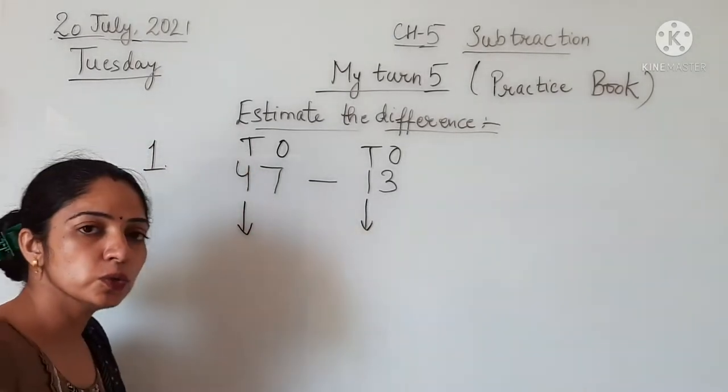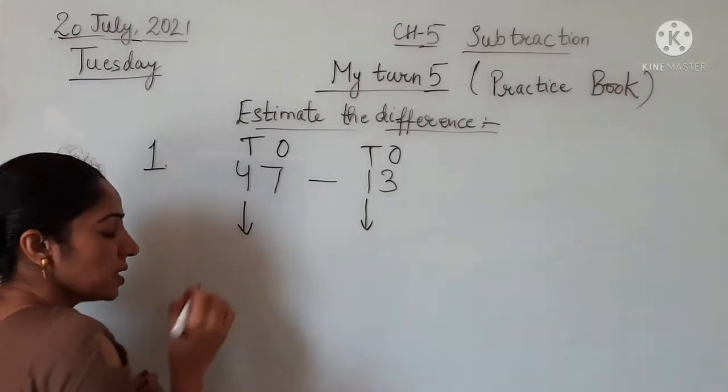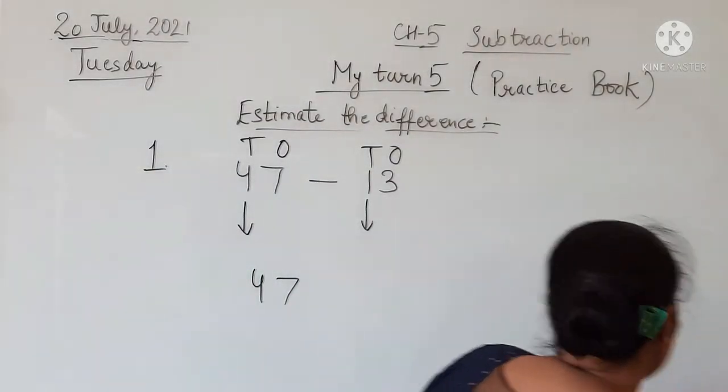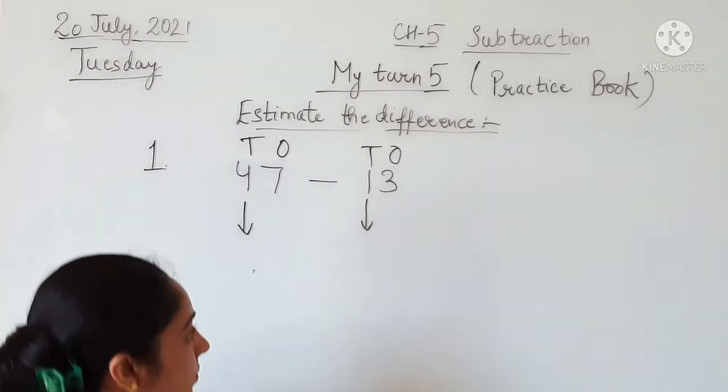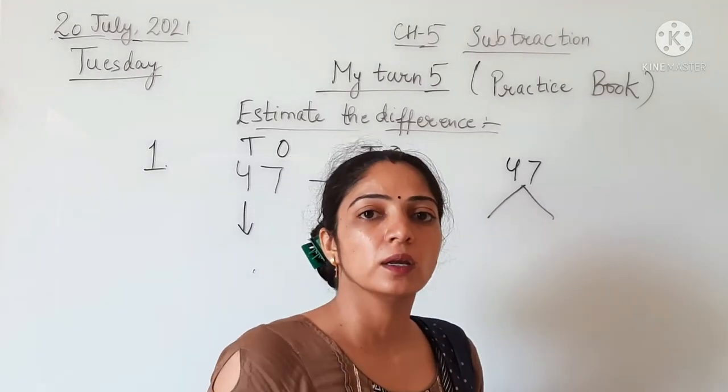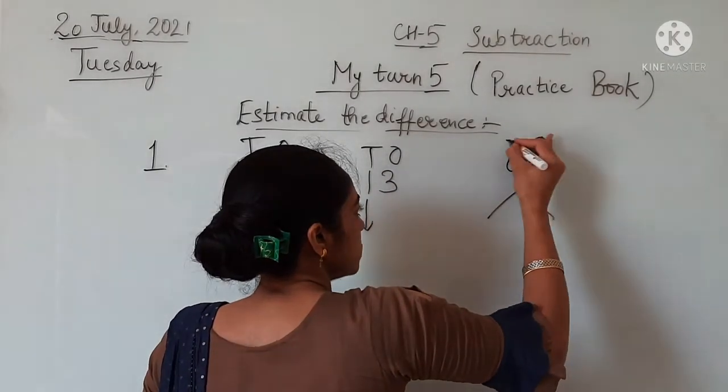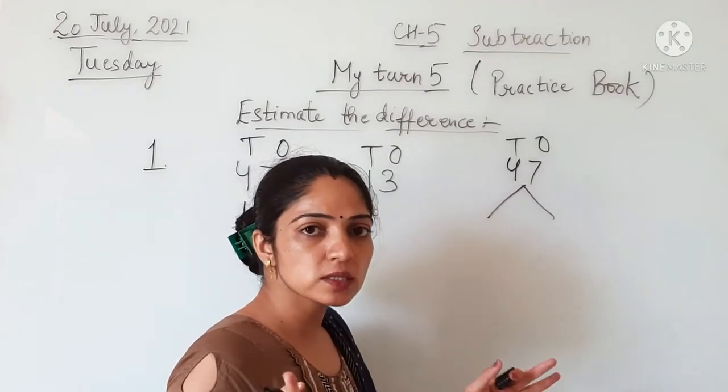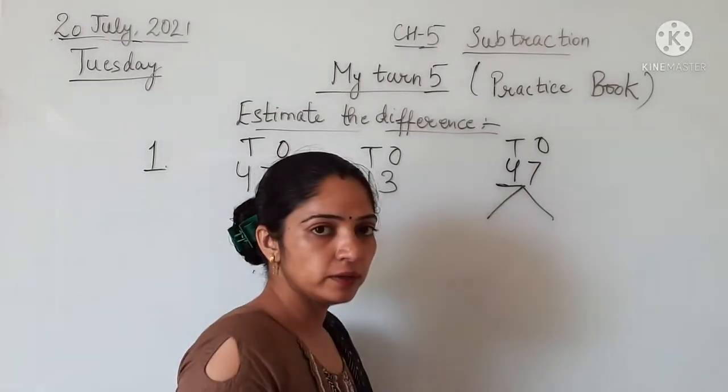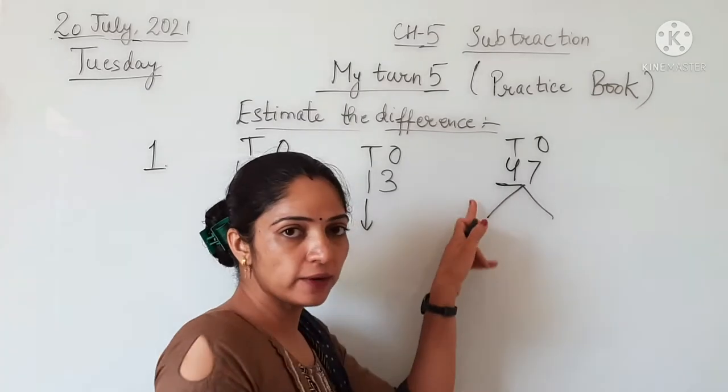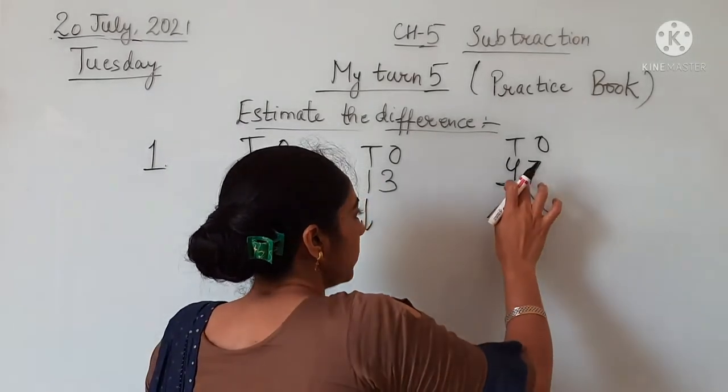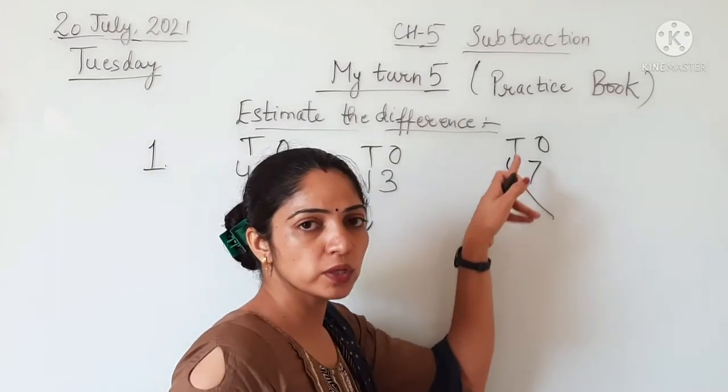Let's do this: 47. We will round off 47 to the nearest 10. So 47 lies between which two tens? First of all, you will check at which place you have to round off the number. We need to round off the number to the nearest 10, so we write the same digit on the left-hand side.